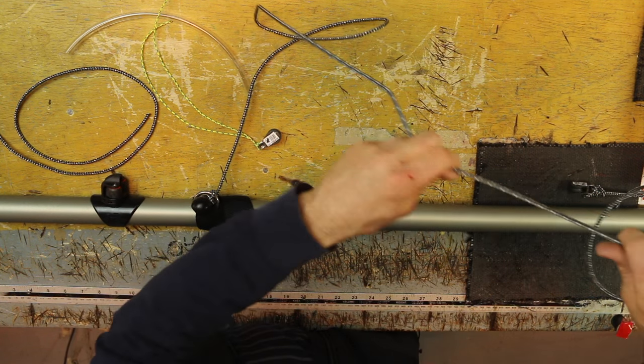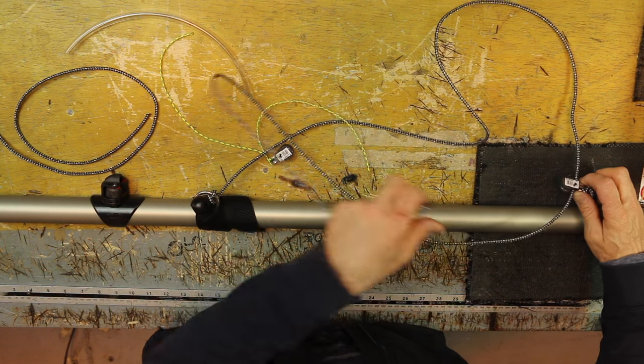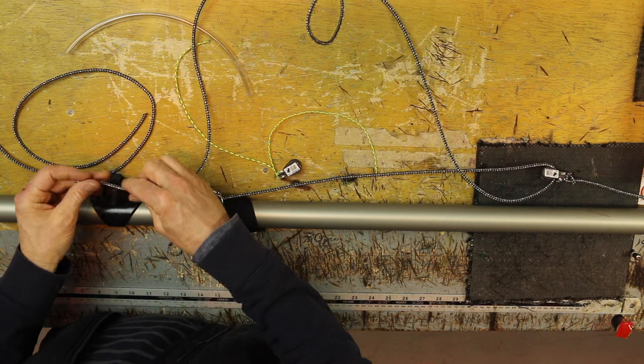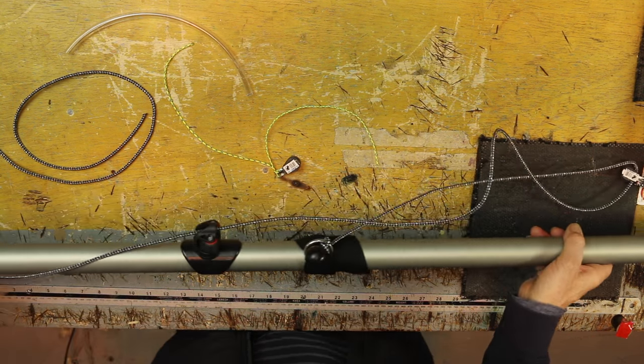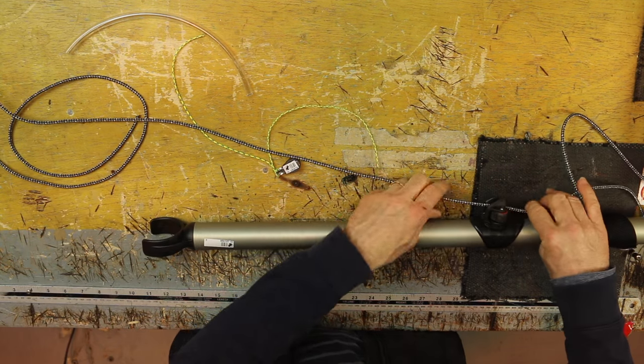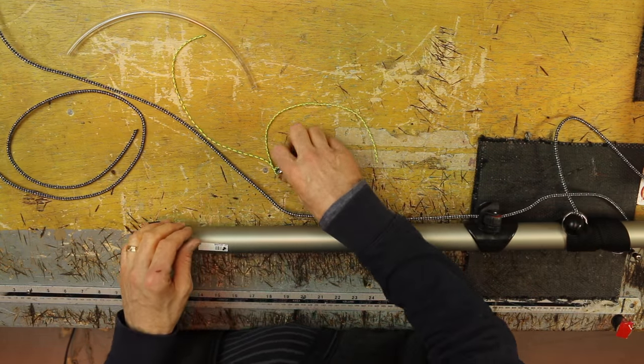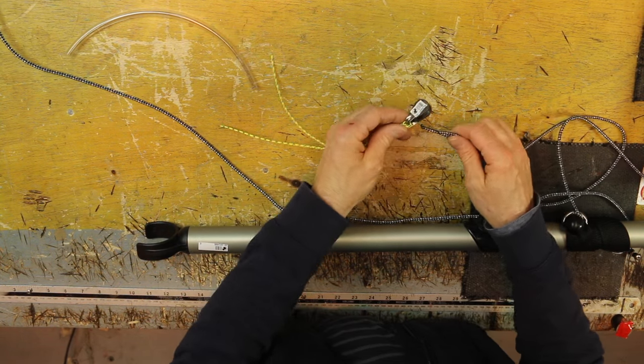Take the control line back through the aft block. You're now going forwards through your cleat. Now we need to somehow make it easy for you to pull it on and make it cleat. We do it with this mechanism here. We attach this block.